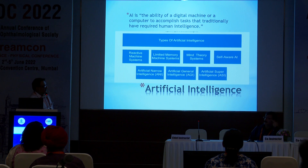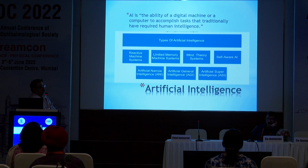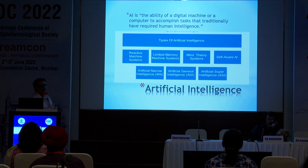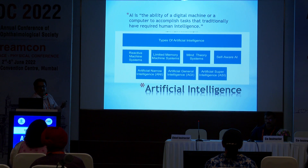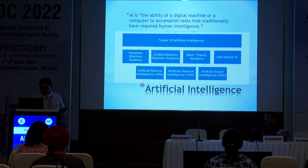The first thing that comes to mind is: what is artificial intelligence? It has variously been described as the ability of a digital machine or a computer to do things which hitherto required human intelligence. The best test for it was given by Alan Turing — he said that if you're talking to a machine and you're not able to tell whether it is a machine or a human being, that is artificial intelligence. That has already been surpassed.